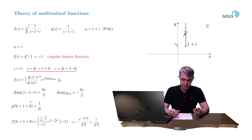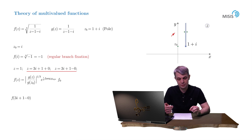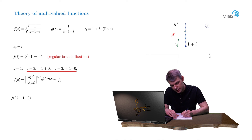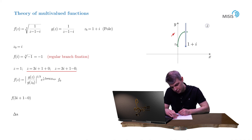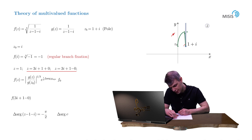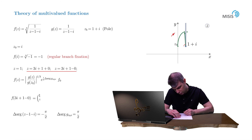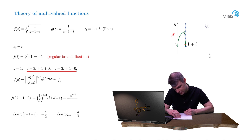For the twin point on the left bank, f of 3i plus 1 minus 0 has the same modulus, but the change of the argument of g is different. Connecting the reference point i with 3i plus 1 minus 0 by a contour that goes around the other side, the change of argument of z minus 1 minus i is minus π/2 (clockwise direction), so the change of the argument of g is plus π/2. Applying the formula: 1/2 to the power of 1/3, times e to i/3 times π/2, times negative 1, giving minus e to the iπ/6 divided by the cubic root of 2.